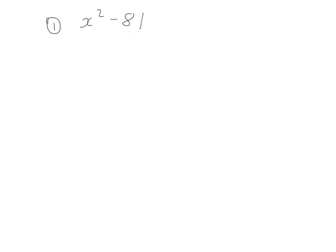The first rule of factorising is to look for a highest common factor. Thereafter, a difference of two squares is something that we look at. For this one, there's no common factor, so it's straight to a difference of two squares.